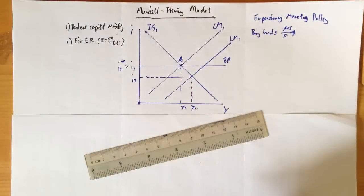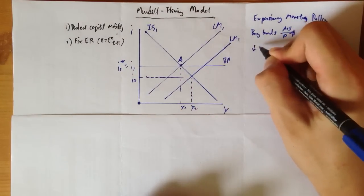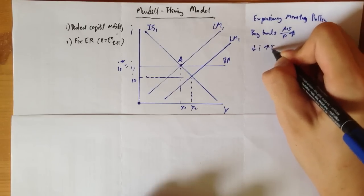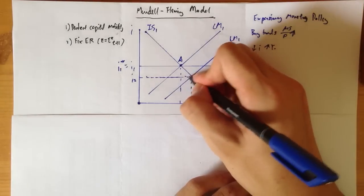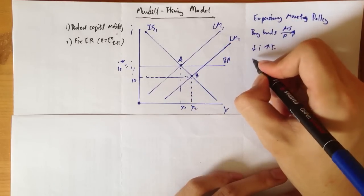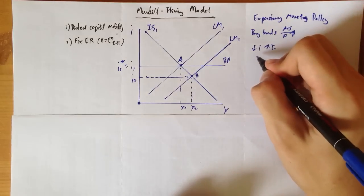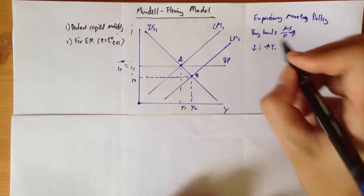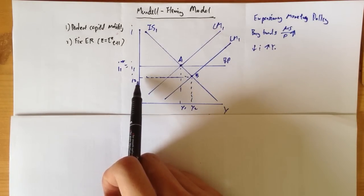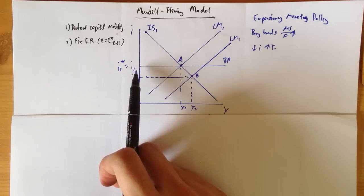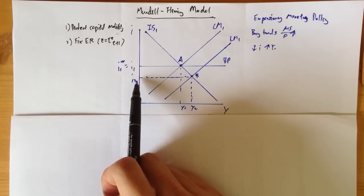There is a decrease in interest rate and an increase in output, so we have our point B here. At point B, we're going to have a massive capital outflow because the interest rate of our economy is actually lower than before — it is at I2 instead of I1. So people want to put their money in foreign countries because they will earn a higher interest rate over there.